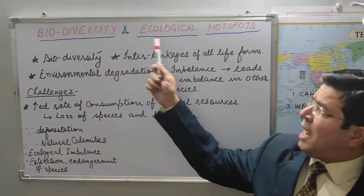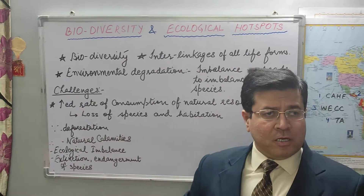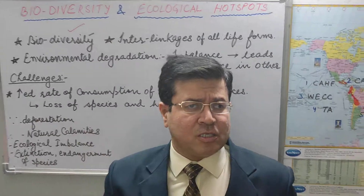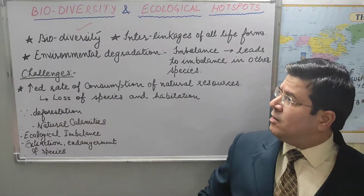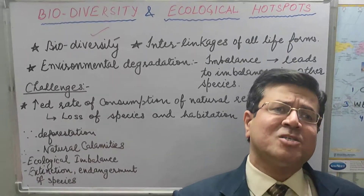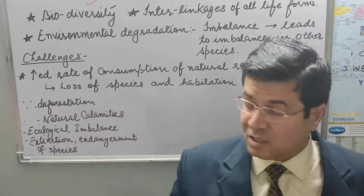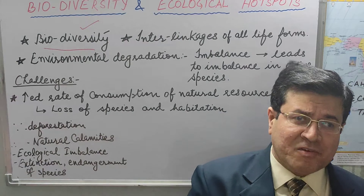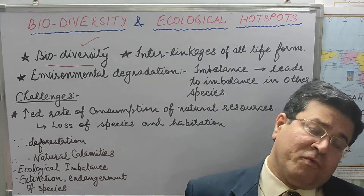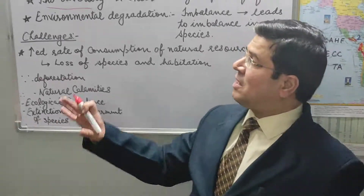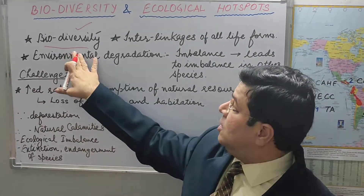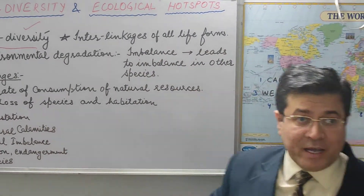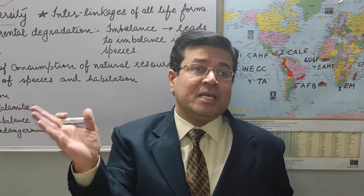Biodiversity and ecological hotspots. Let's try to understand what is biodiversity. In the whole world we have many ecological systems, many ecosystems, and a large variety of plant species, animal species, and bird species. We have biodiversity in the world because we don't have the same kind of climatic conditions or vegetation types everywhere. We have variety of vegetation and variety of climatic conditions, and because of interlinkages of all life forms, biodiversity helps us in maintaining ecological balance.